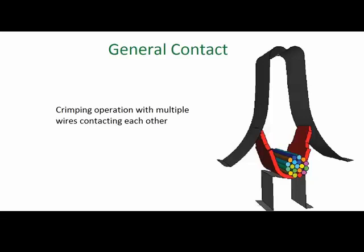In general contact, the analyst does not need to predict which surfaces may come in contact. Instead, Abacus monitors the surfaces of all parts involved in the simulation and automatically detects contact between them. Therefore, you would only define general contact once in the simulation setup for crimping, and any contact interaction between any of the wires would be detected by Abacus automatically.